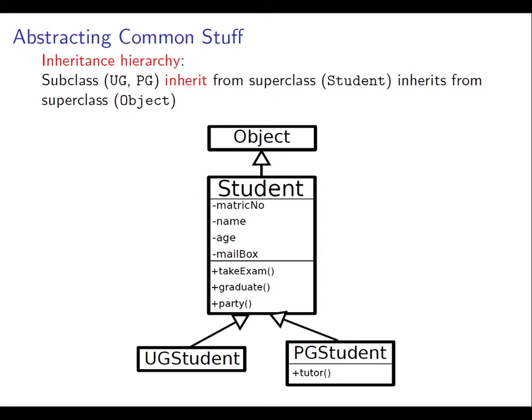Just to recall, inheritance allows you to abstract out common stuff from several classes. We saw this example before where we have a student class and its two specializations, UG student and PG student, PG student having an additional ability to respond to the message tutor. We discussed how every class in Java inherits from the class object.